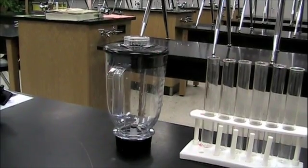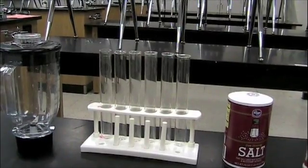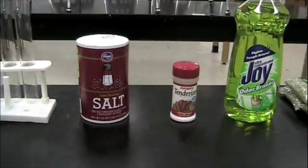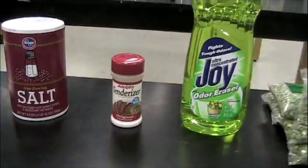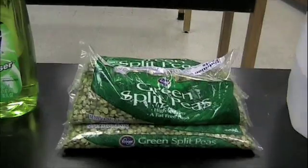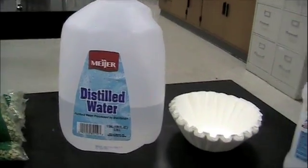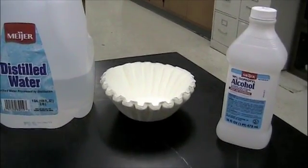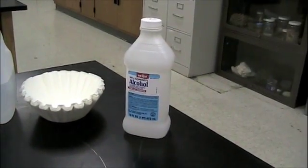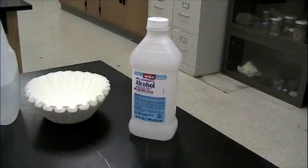For this lab, you'll need a blender, one test tube per lab group, some salt, meat tenderizer, dish liquid, split peas, distilled water, coffee filter or other filtering device, and some rubbing alcohol. You can use 75% to 99% alcohol content.